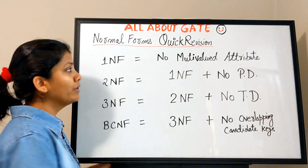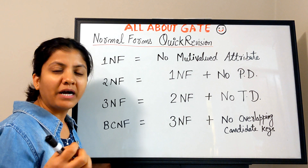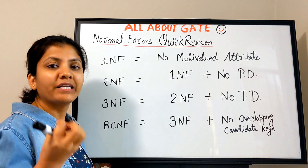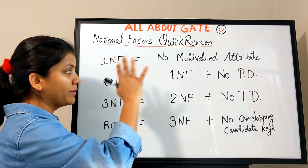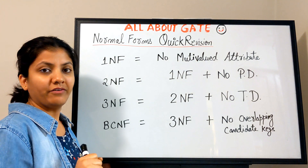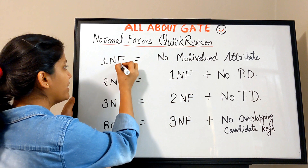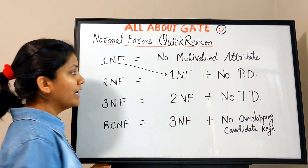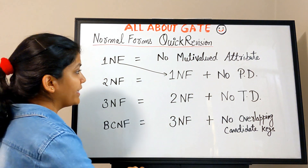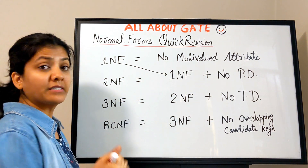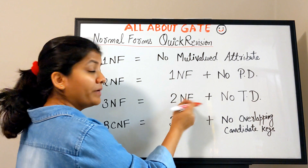1NF: no multivalued attribute; a proper format of relation schema following all the properties of the relational model. If relation properties are defined properly, that relation is in 1NF. 2NF: it has to be in 1NF first, and it must have no partial dependency. So 2NF equals 1NF plus no partial dependency.